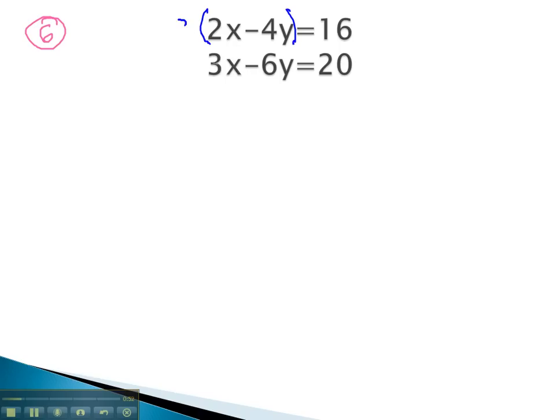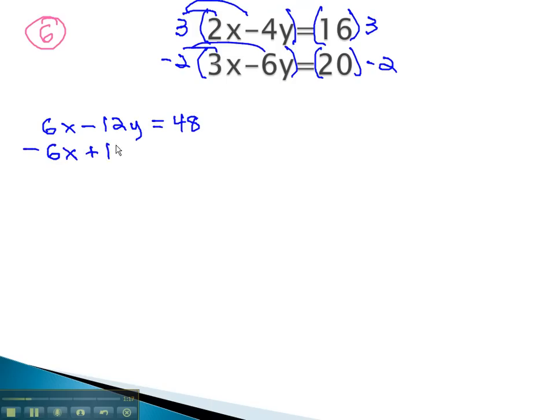To get positive 6x, we would have to multiply the 2 by 3 on both sides. To get negative 6x, we can multiply the second equation by negative 2 on both sides. As we do, we end up with 6x minus 12y equals 48 for the first equation, and negative 6x plus 12y equals negative 40 for the second equation.